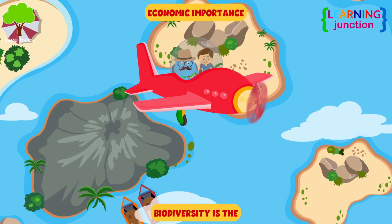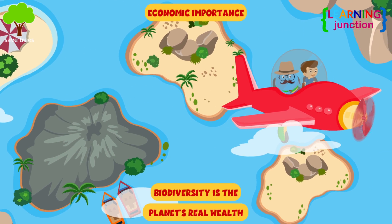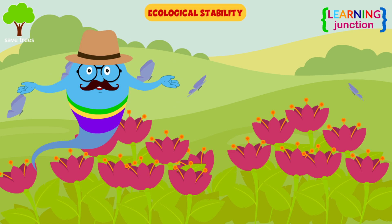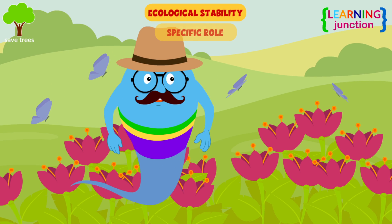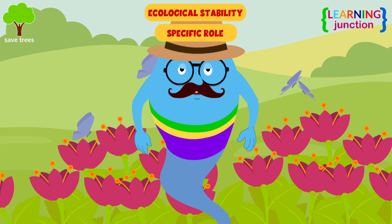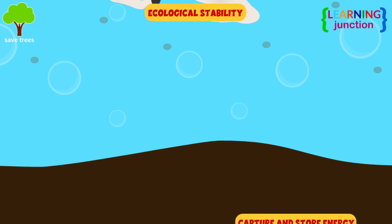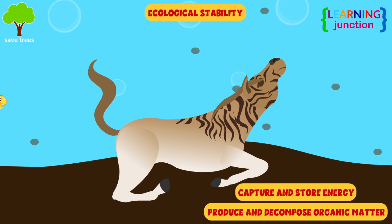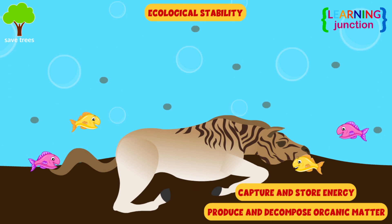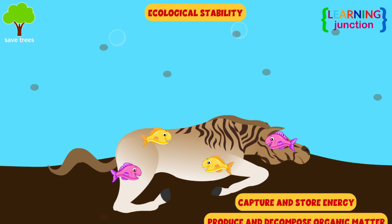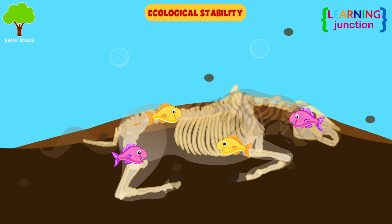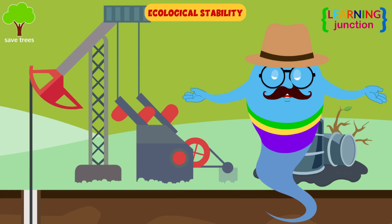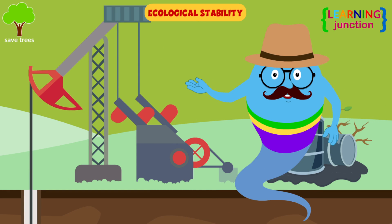Biodiversity is the planet's real wealth. Ecological stability: each and every species has a specific role in the ecosystem. They capture and store energy, and they also produce and decompose organic matter. The ecosystem supports the services without which animals and humans cannot survive.